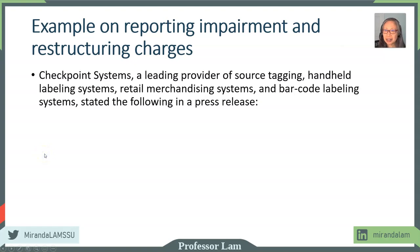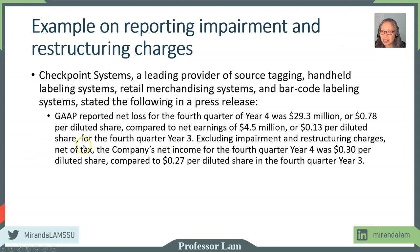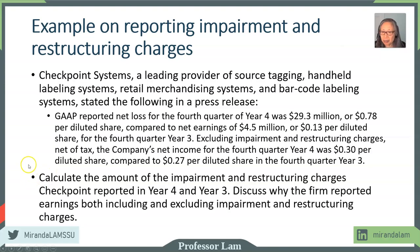Here's an example. Checkpoint Systems makes inventory tracking systems. This is what they put out in a press release. Our job is to calculate the amount of impairment and restructuring charges based on that press release. We can also discuss why the firm chose to report not just net earnings, but also earnings excluding impairment and restructuring charges.